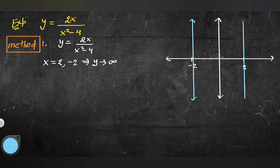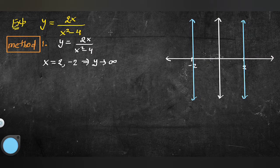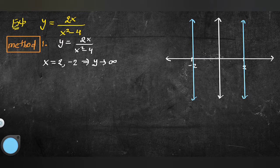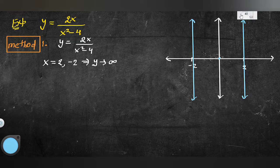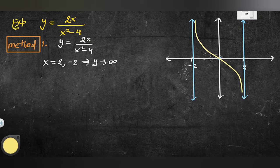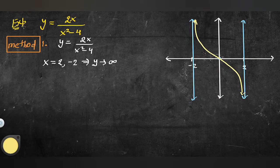Curve کی shape دیکھنے کے لیے: x = 0 پر y = 0 یعنی curve origin سے cross کرتا ہے۔ Curve x = −2 اور x = 2 کو touch نہیں کرے گا — ان asymptote lines کے درمیان سے گزرے گا۔ Curve tracing کے لیے origin، curvature اور intersection points ڈھونڈنے پڑتے ہیں — اس کا الگ lecture already دیا جا چکا ہے۔